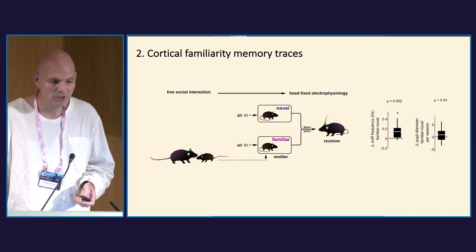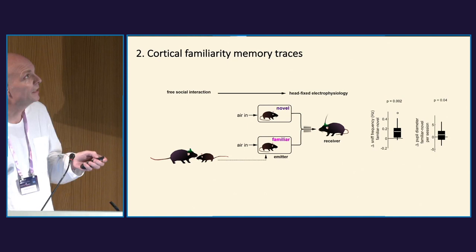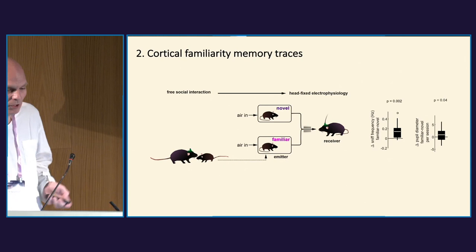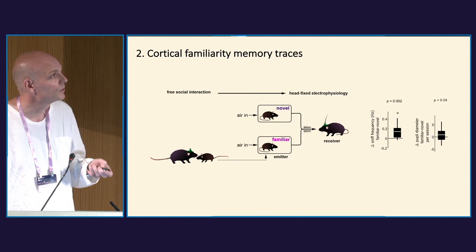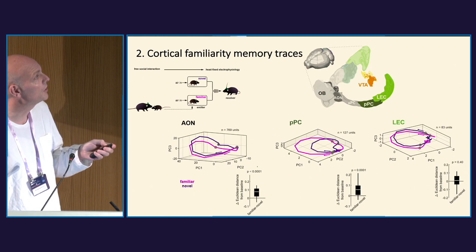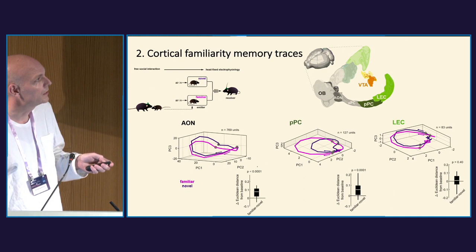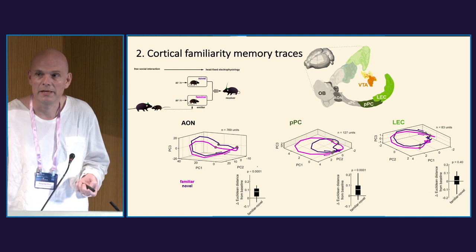Using this population approach we could examine features of familiarity. We performed a freely-moving social interaction, put the interaction partner into one of the boxes along with a novel animal the receiver had never seen, then presented the odors repeatedly. One of the first things noticed regarding saliency was a stronger sniff response and also a pupil response towards the familiar animal. This may already indicate that the actual cognition process is not simply habituation. Looking at the neuronal data, the deflection from baseline for the familiar was stronger than for the novel, and this also applied in the posterior piriform cortex.